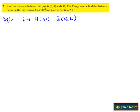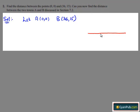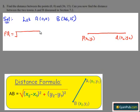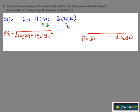We need to find the distance between the two points A and B. We know that the distance between two points P and Q is given by PQ equals the square root of (x2 - x1) whole square plus (y2 - y1) whole square. Here, we represent point A as (x1, y1) and point B as (x2, y2).